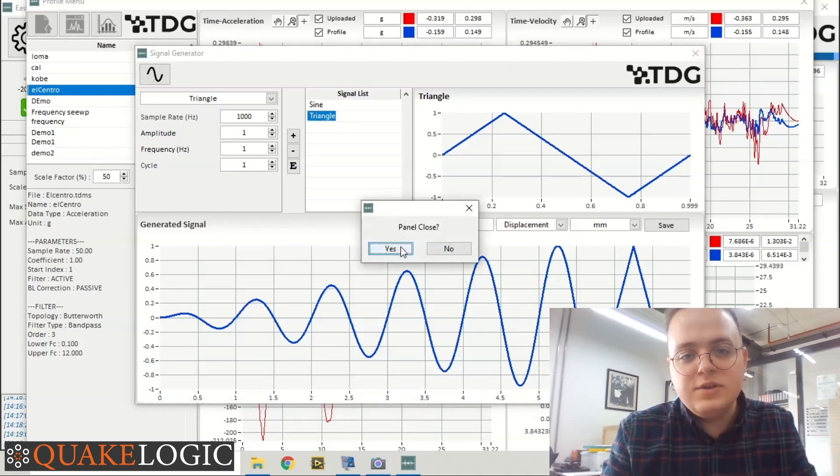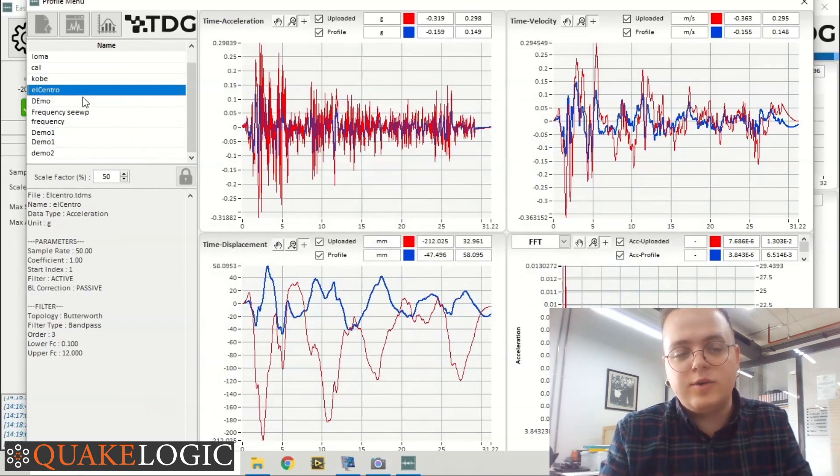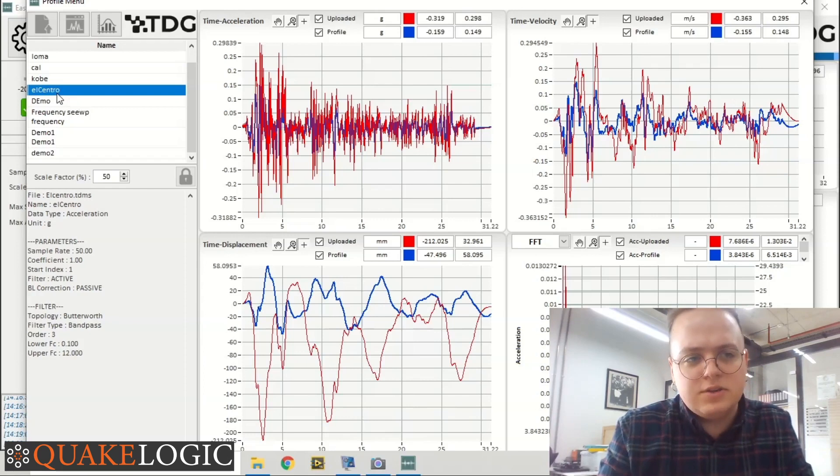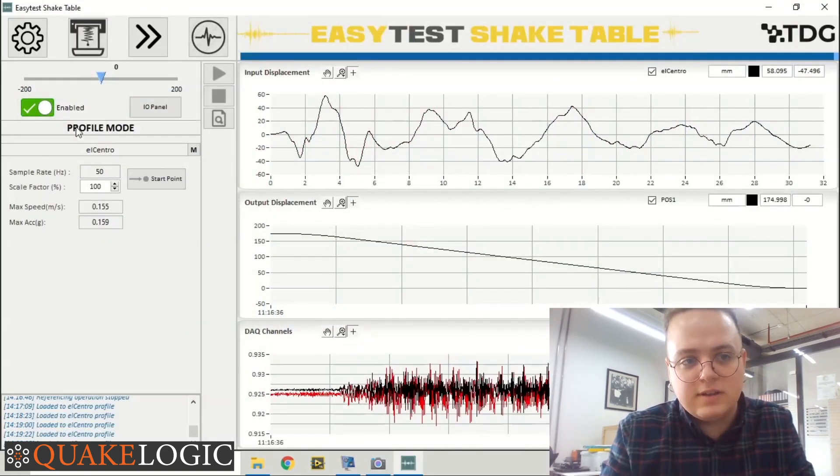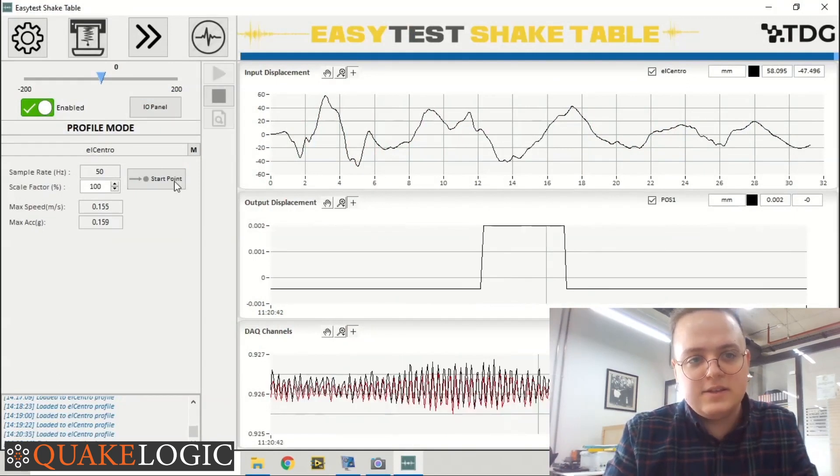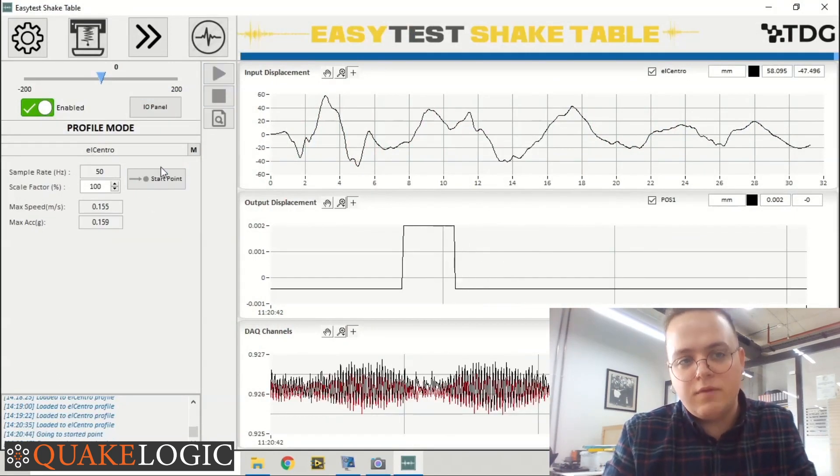Now let's use real earthquake data from the El Centro earthquake. You can find this earthquake data on the internet. Since we have the data for the El Centro earthquake, let's upload this to our device. We will choose El Centro, and then close it. As you can see, the El Centro title has appeared. Let's start the profile by clicking on the start button.